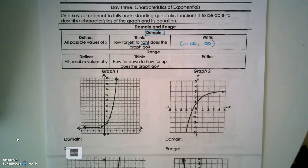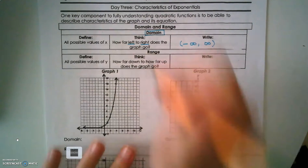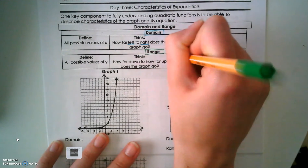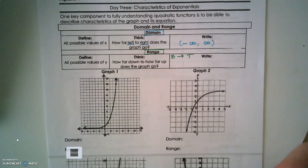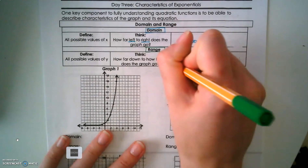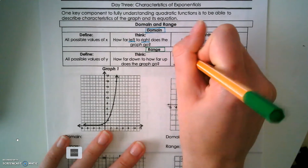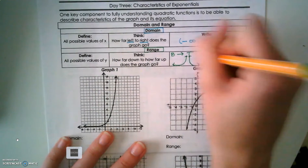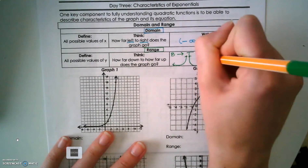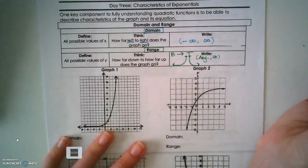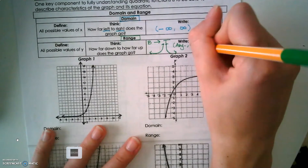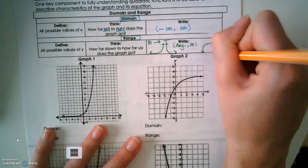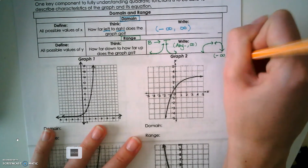Our range — remember, we're talking about all the possible y values. When we talk about range, we talk about from bottom to top. So if my graph is opened, or is a growth, or it's a decay, that's going to be from our asymptote to infinity. If my graph has any sort of reflection, that's going to be from negative infinity up to my asymptote.